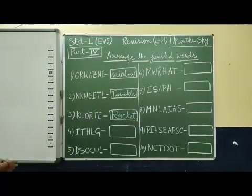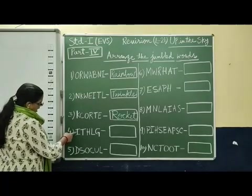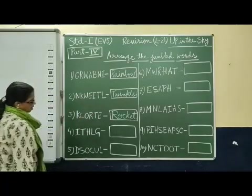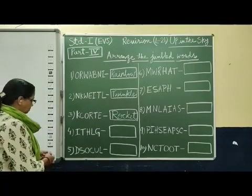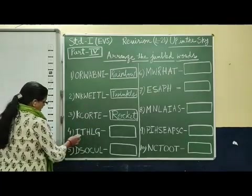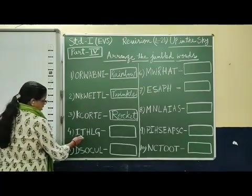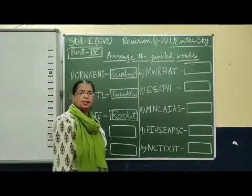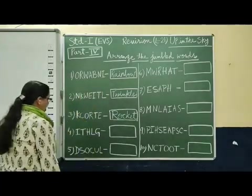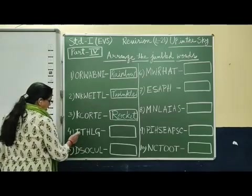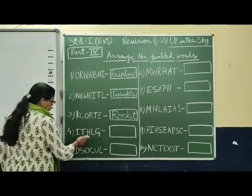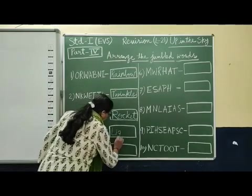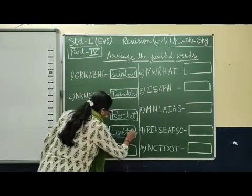Next one: I, T, H, L, G. Which spelling? Very easy one. See here: L, I, G, H, T — Light. The sun gives us heat and light. So: L, I, G, H, T — Light.